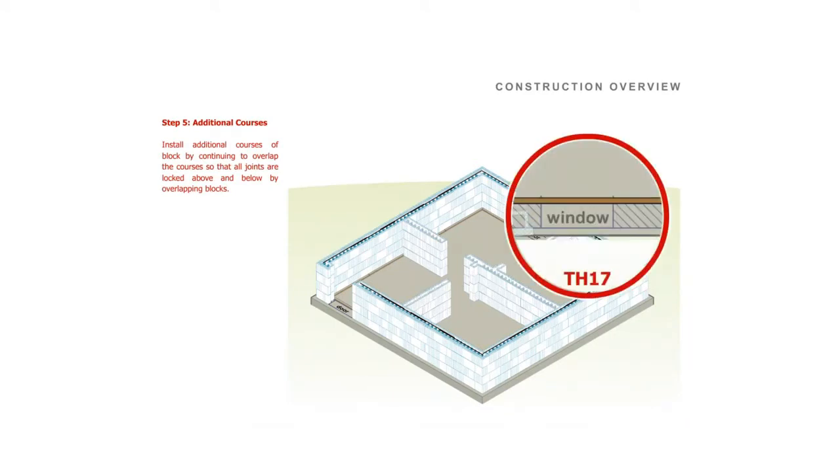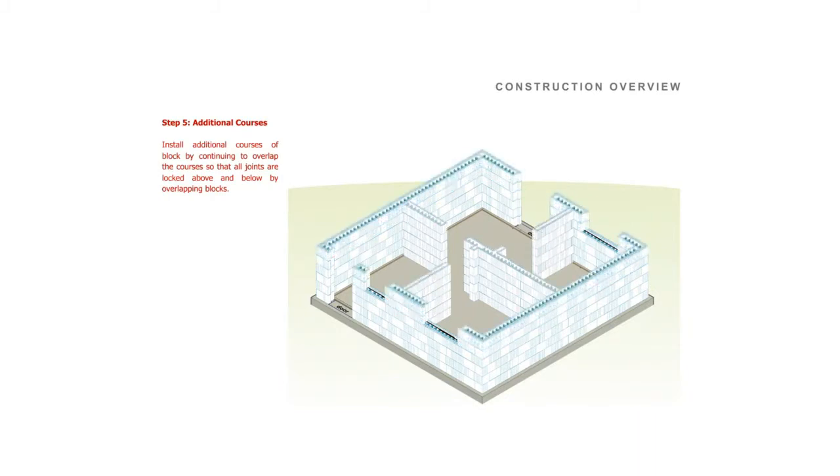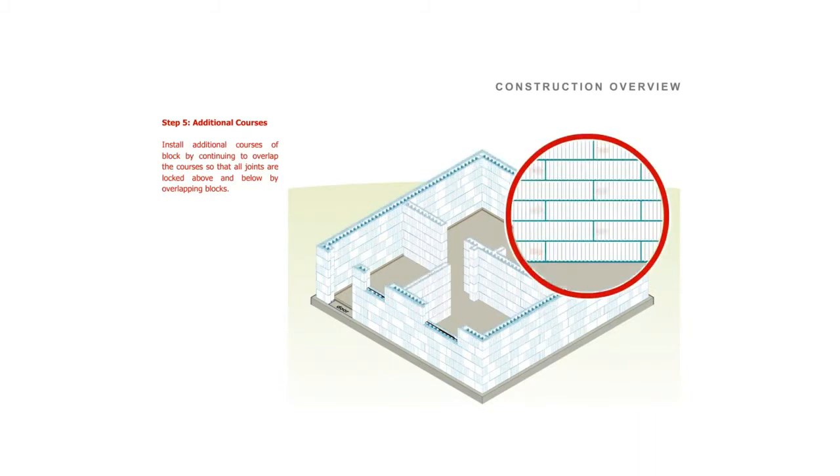Step 5. Additional courses. Install additional courses of block by continuing to overlap the courses so that all joints are locked above and below by overlapping blocks.